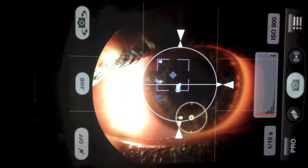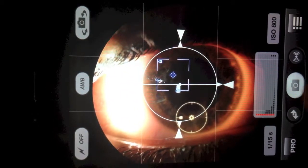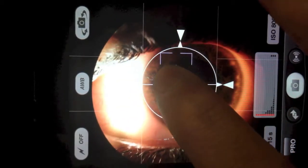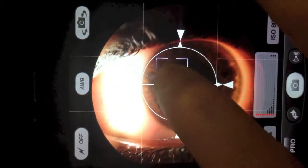Third, focus on your area of interest by holding your finger over the blue focus square over your area of interest.